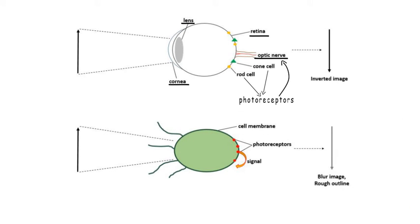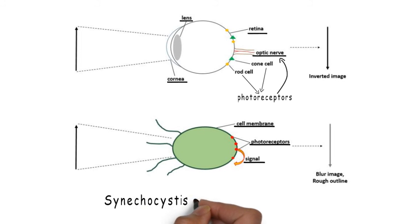Similarly, Synechocystis cells focus light on the cell membrane where it is detected by photoreceptors. These photoreceptors signal other molecules to bring about movement of the cell. Thus, Synechocystis cells act as microscopic eyeballs.